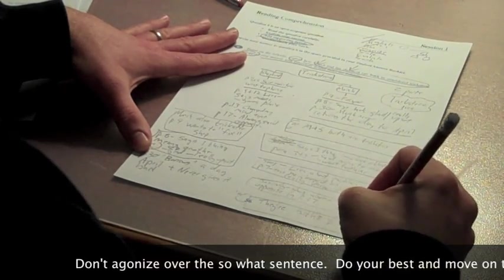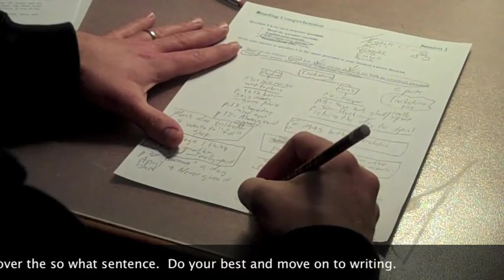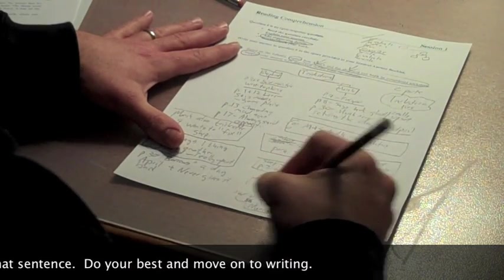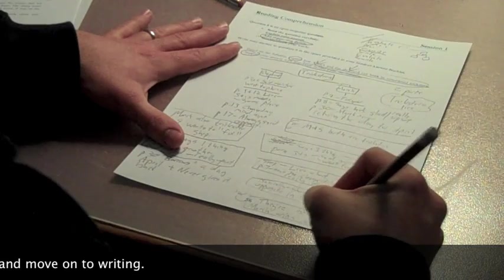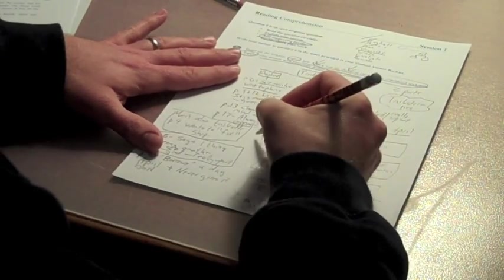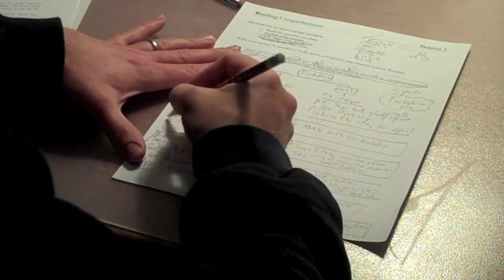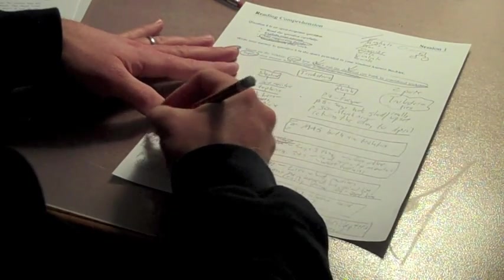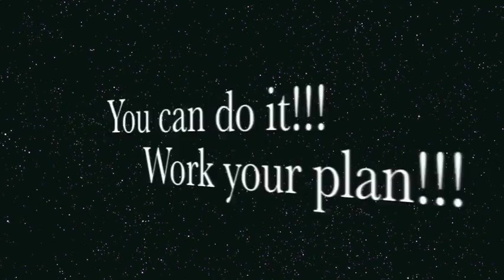Then the 'so what' - they're both tricksters but March wins in the end. Now I'm just going to number this 1, 2, 3, 4, 5, 6 - this is a very logical organization.